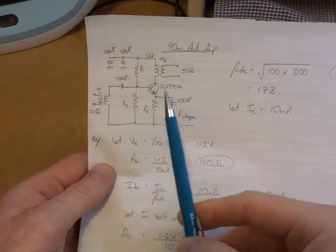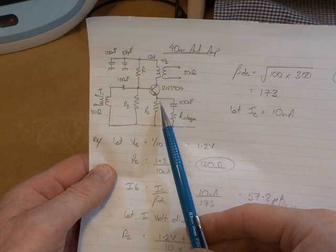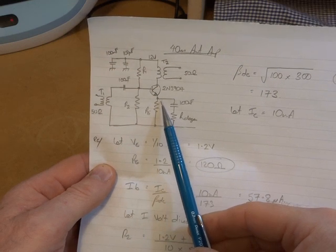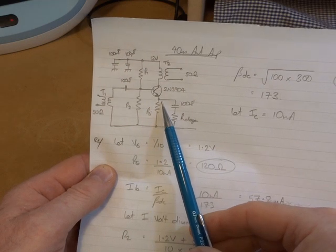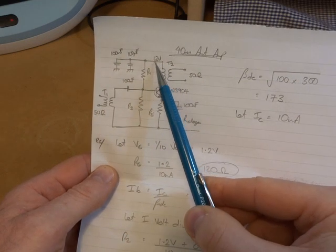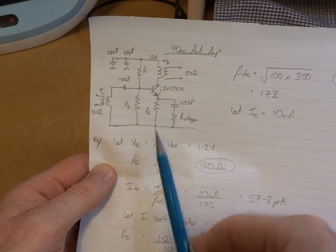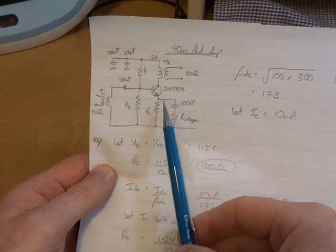Right, so in terms of biasing, I'm going to use again that rule of thumb of having, or that one that's often used, the emitter voltage. I'll set that to be 10% of our VCC. So 10th of 12 equals 1.2 volts.